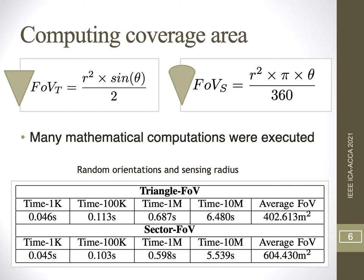When computing coverage area, we have different equations since they are different geometrical forms. The first evaluation we made was to consider the coverage area computation problem, considering random orientations and different sensing radii, for a number of executions from 1,000 to 10 million sequential computations. In this first experiment, the triangle FOV took a little longer to execute, but the average covered area was smaller when compared to the sector FOV, because of the geometrical form they define. This was already expected.